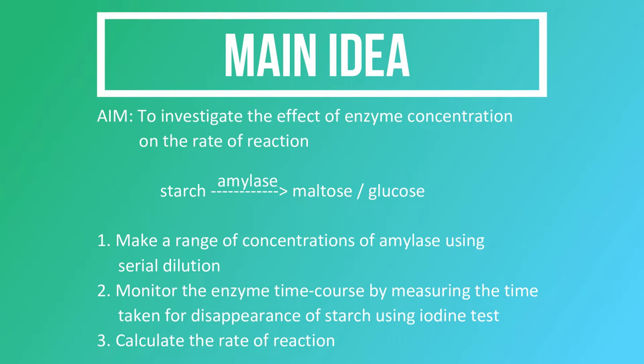Number one is to use serial dilution to make a range of concentrations of amylase. This allows us to get a range of different enzyme concentrations. Number two, we're going to monitor the enzyme time course by measuring the time taken for disappearance of starch, because starch is the substrate. It will be broken down all the time, and we can look at the disappearance of starch using iodine tests.